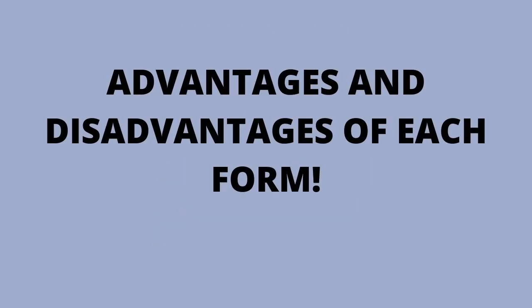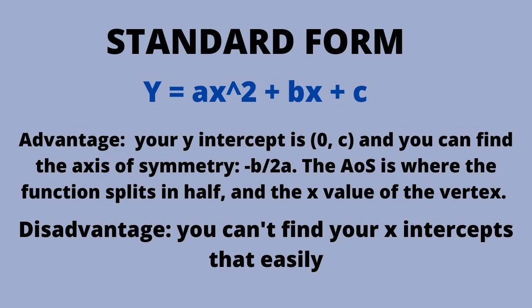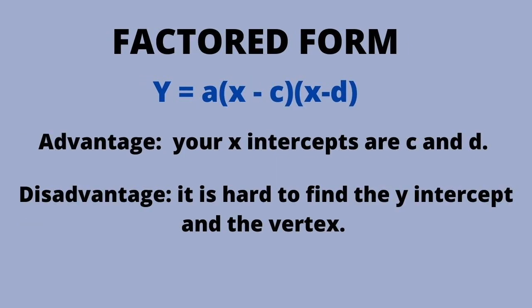There are three different forms of quadratic functions: vertex, standard, and factored form. Each has advantages and disadvantages. Vertex form helps you find the vertex (h, k). For standard form, (0, c) is the y-intercept and -b/2a is the x-value of the axis of symmetry. Factored form helps you find your zeros, roots, or x-intercepts.